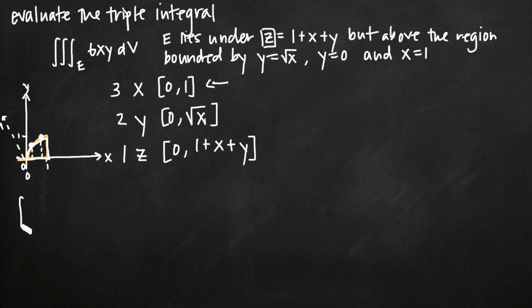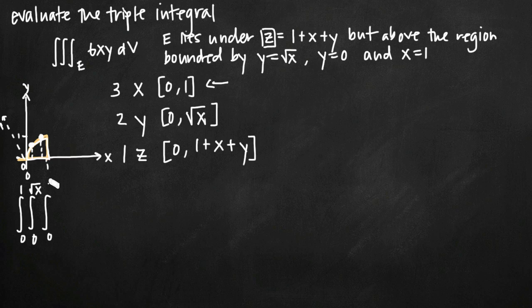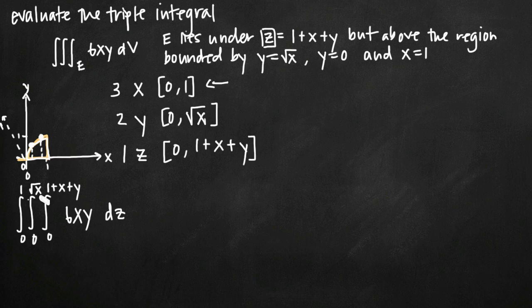Writing out our integral: the outer integral has limits of integration for x, from 0 to 1. The second integral is with respect to y, with limits 0 to square root of x. The innermost integral has limits 0 to 1 plus x plus y, and we're integrating 6xy. We match up dz, dy, and dx from the inside out — so dz goes first on the inside, then dy, then dx on the outside. It's just like a sandwich: z's on the inside, then y's, then x's on the outside.